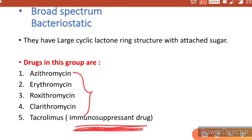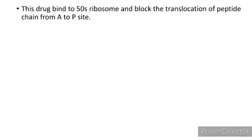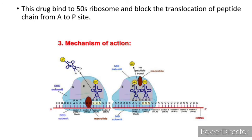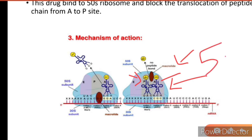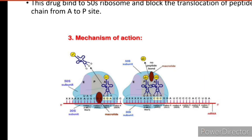Macrolides bind to the 50S ribosome and block the translocation of the peptide chain from the A-site to the P-site. Here in the diagram you can see the 50S ribosome unit and the macrolide binding over here, blocking the translocation of the peptide chain. You can also see the P-site and A-site. Importantly, macrolides bind with the 50S ribosome, while tetracyclines bind with the 30S, as seen in an earlier video.